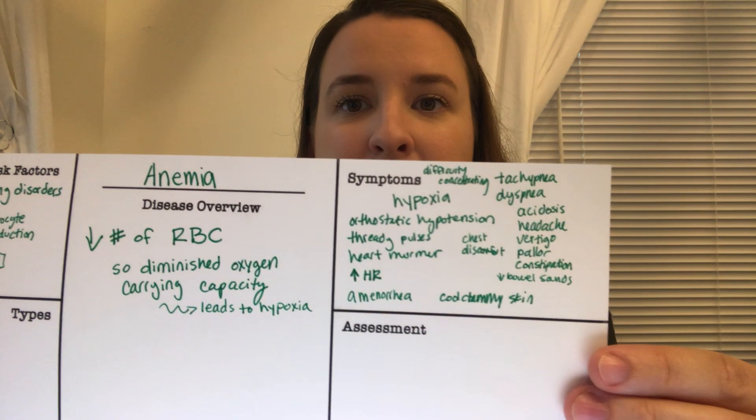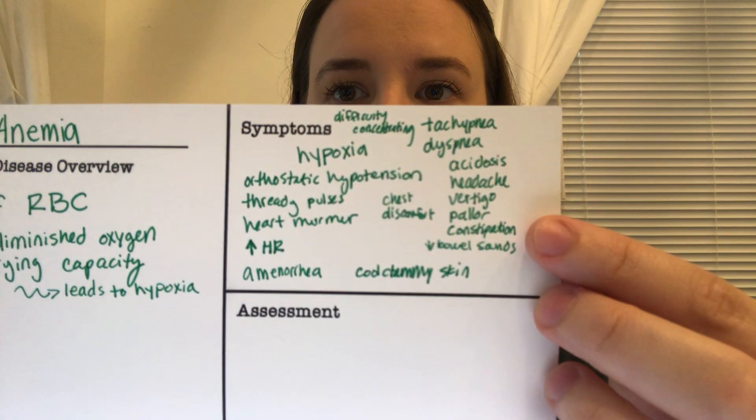Since you have fewer red blood cells or decreased carrying capacity, there's going to be less oxygen that can get to the body. When a body part is not receiving enough oxygen, there will obviously be pain — that's one of the first symptoms of anemia. There will also be hypoxia, orthostatic hypotension, and thready pulses.